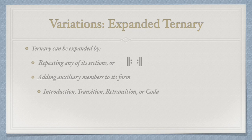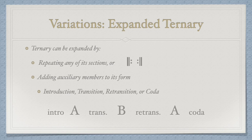Now that you have the basics down, we can talk about some variations in relation to ternary form. If the piece does not exhibit a basic A-B-A structure, it's said to be expanded. These expansions can look like a repetition of any of its sections, or adding auxiliary members such as an introduction, a transition, a retransition, or even a coda. Although it would be pretty unlikely for all of these expansions to show up in one piece, it's not unheard of.